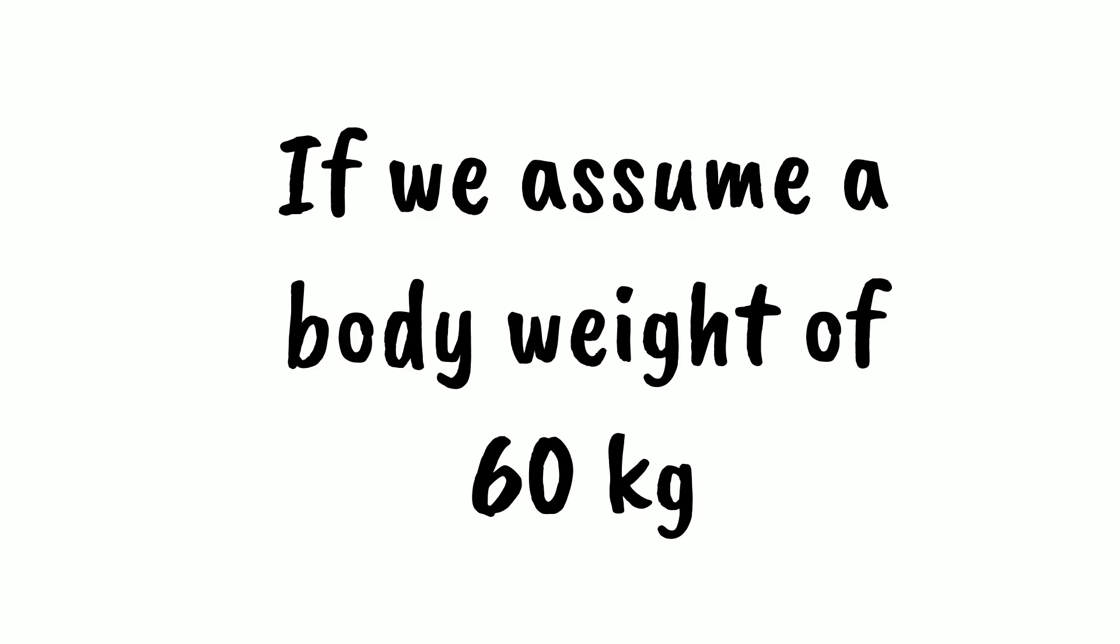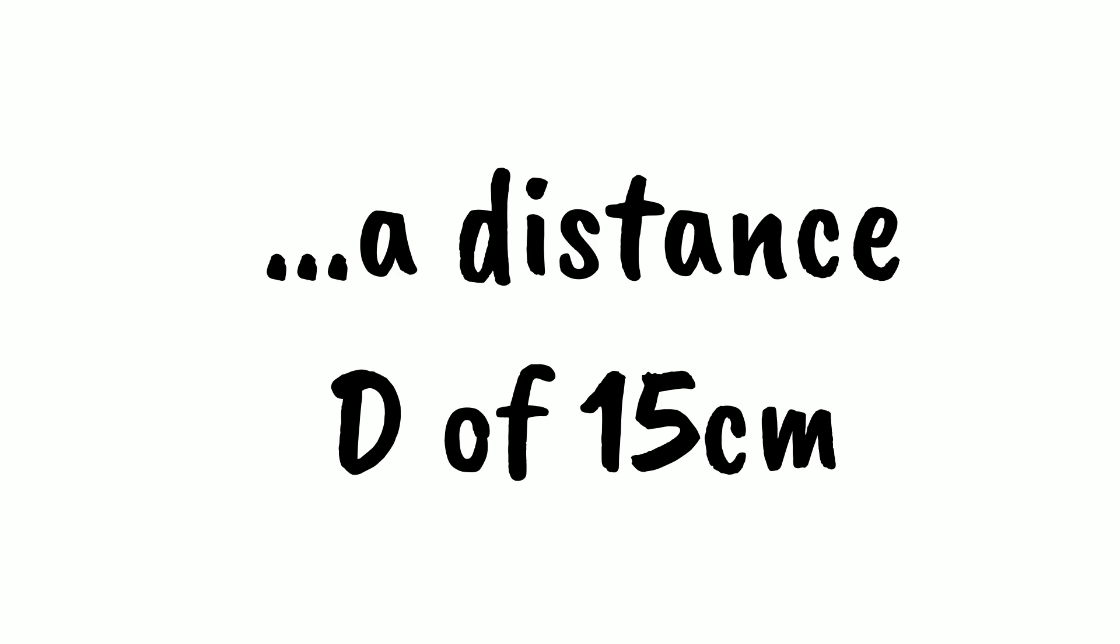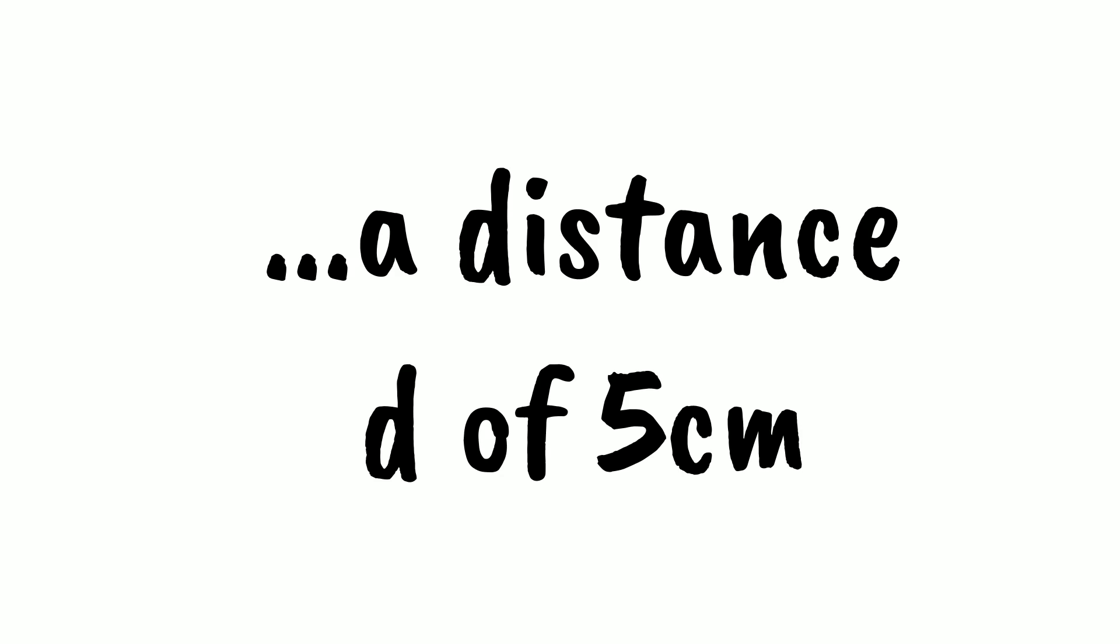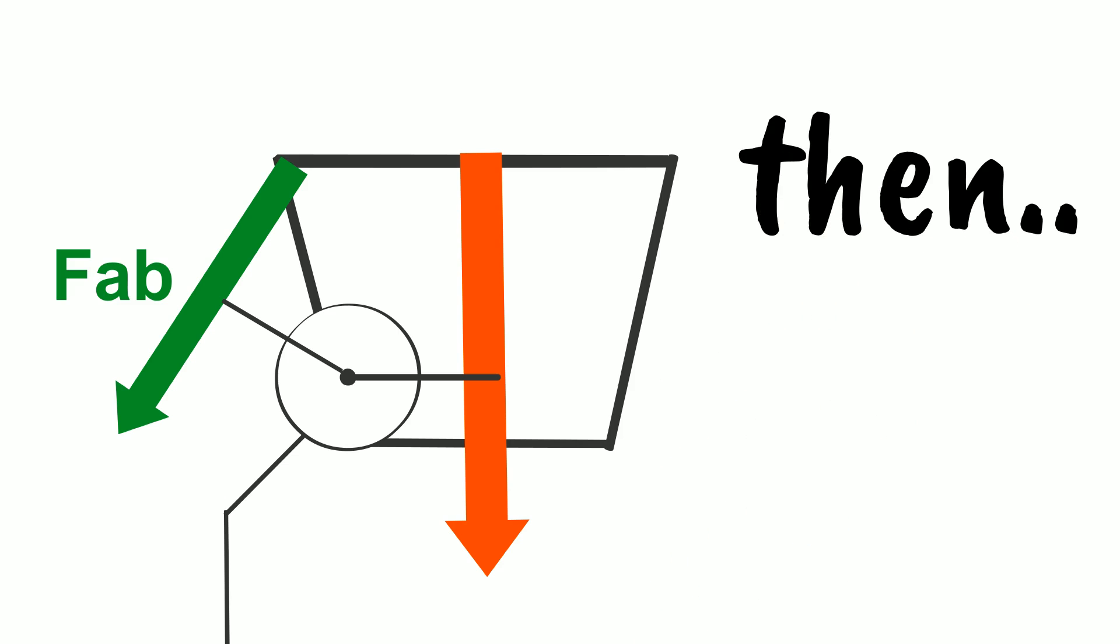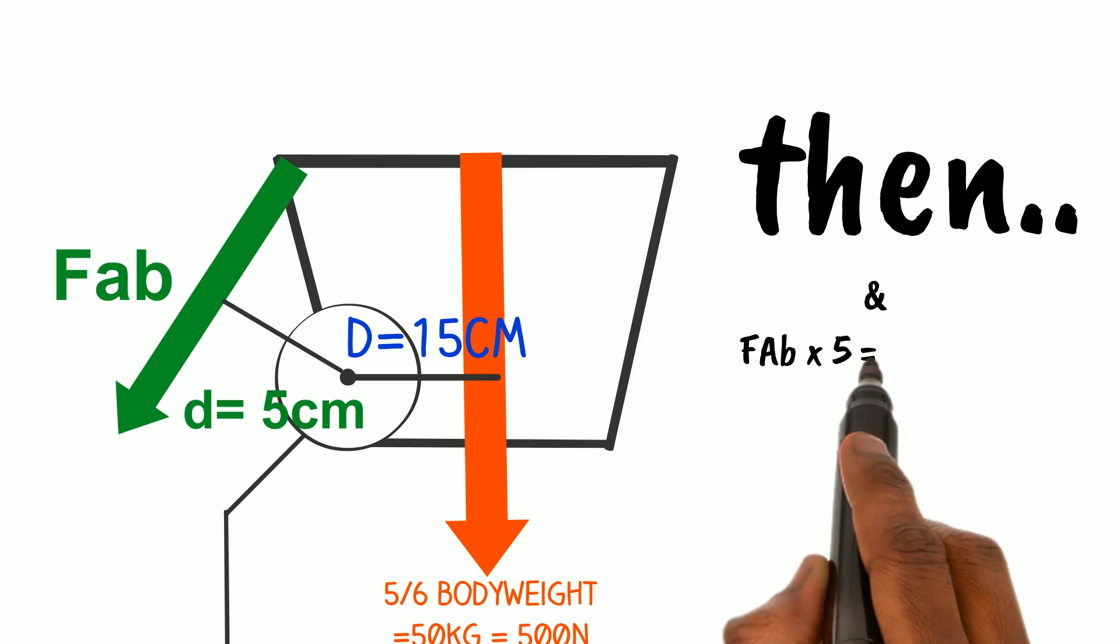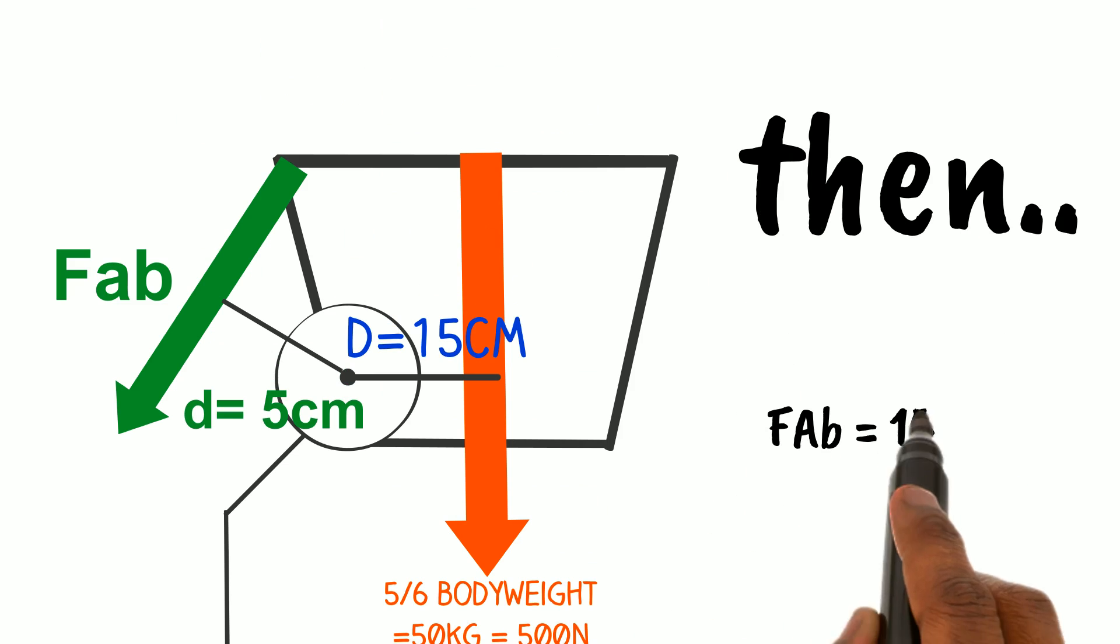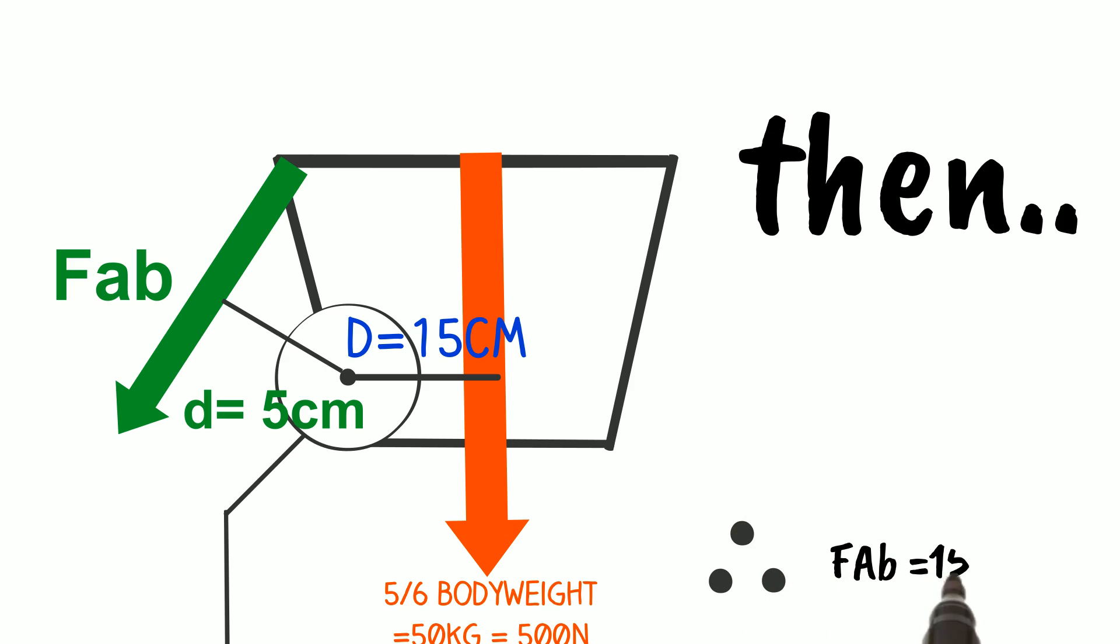If we assume a body weight of sixty kilograms, a distance capital D of fifteen centimeters, and a distance little d of five centimeters, then FAB times five equals fifteen times five hundred newtons. Hence FAB equals fifteen times five hundred over five, therefore FAB equals one thousand five hundred newtons.